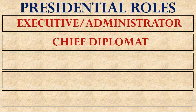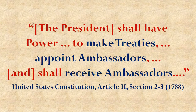The next job that we expect the President to take care of is to be the Chief Diplomat for the country. The President has been assigned several powers in the Constitution that enable him to fulfill this function as Chief Diplomat. The Constitution says that the President will make treaties with other countries, appoint ambassadors to represent the United States in those other countries, and receive the ambassadors from those foreign countries when they come to visit the United States.